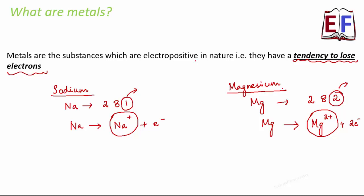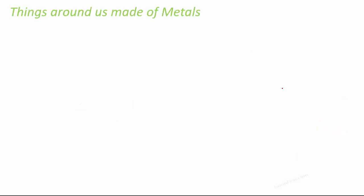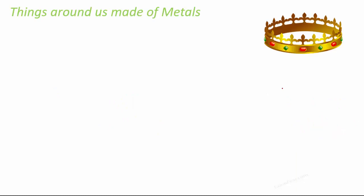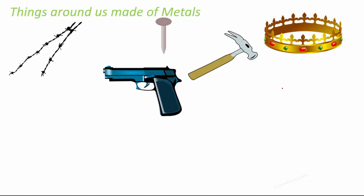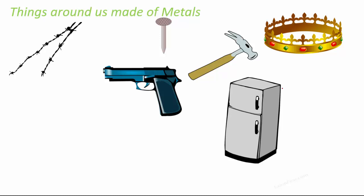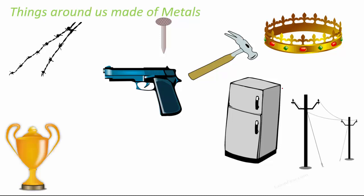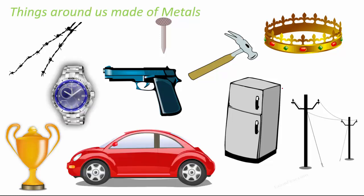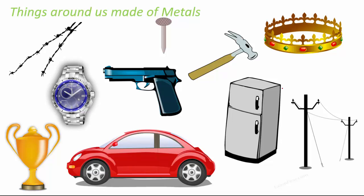Let's quickly look at things around us which are made of metals. Any kind of jewelry — whether it is necklaces, bangles, earrings, or crowns — they are all made up of metals like gold or silver. Think about the hammer or the nail — they are all metals. The wires, the refrigerator, different parts of the refrigerator are made up of different metals. The trophies which you get when you win a game, cars, watches — these are all made up of metals. Think about your cycle or your bike — they all have a lot of metals within them.